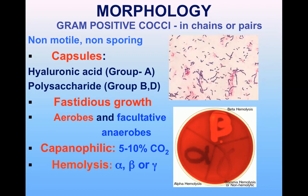Coming to the morphology of streptococci, they are gram-positive cocci in chains or in pairs. They are non-motile and non-sporing. They have a capsule around them. In the case of Group A, this capsule is made up of hyaluronic acid, and with Groups B and D it is polysaccharide in nature.